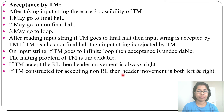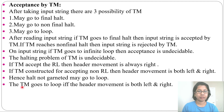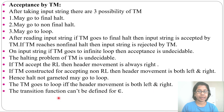If the Turing machine is constructed for accepting non-regular language — context-free, context-sensitive, or recursively enumerable language — then the header movement is both left and right. Hence, halt is not guaranteed and it may go into a loop. If movement is both left and right, there is a chance of a loop; if it moves only right, there is no chance of a loop.